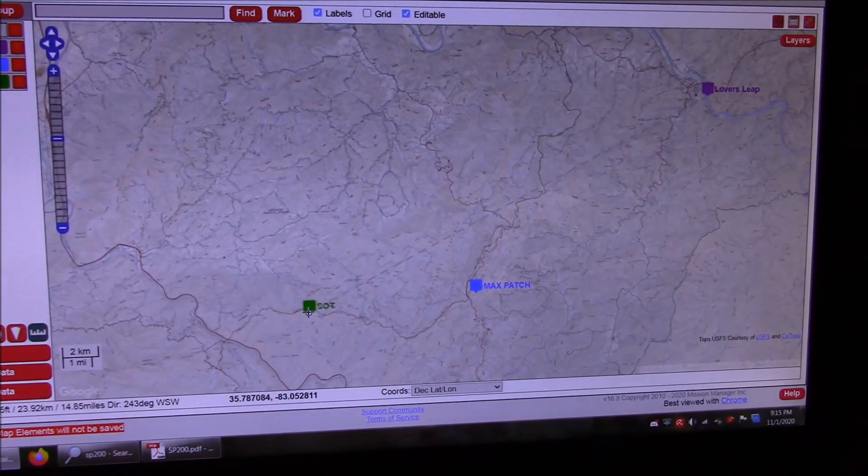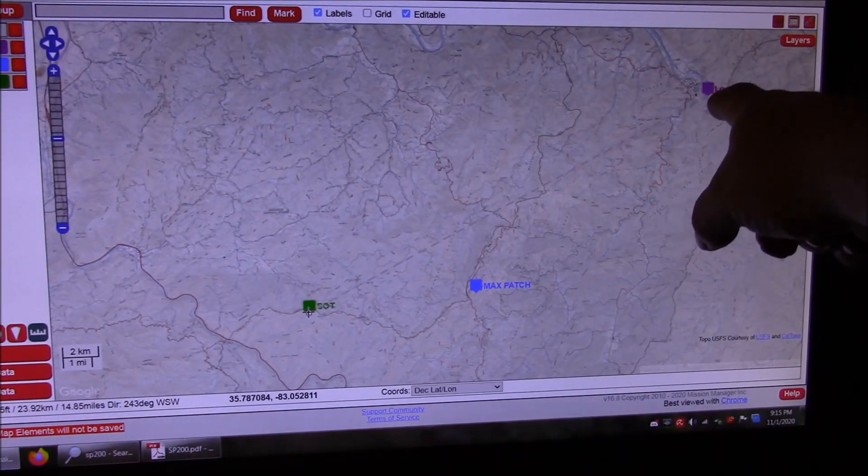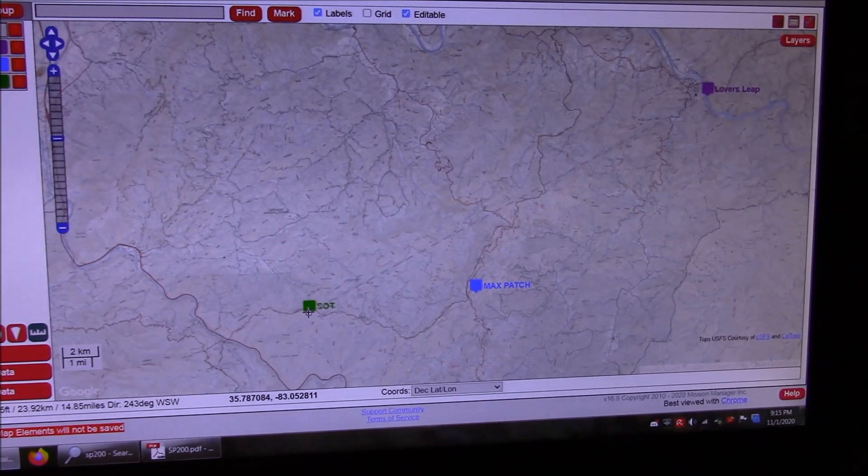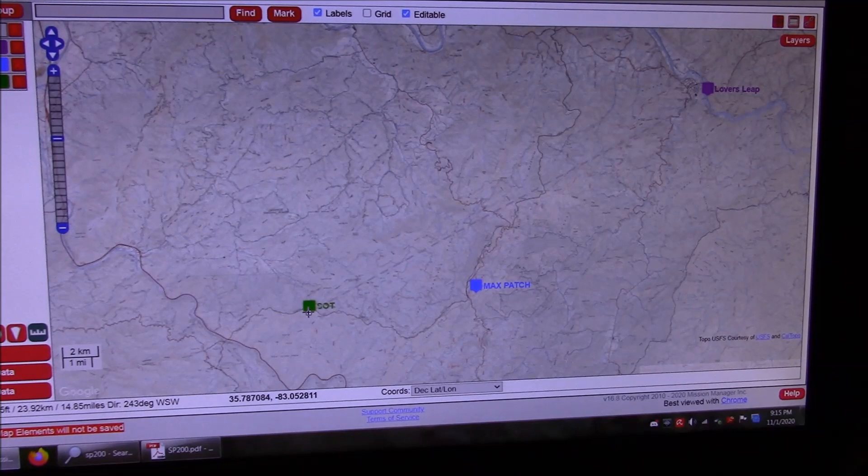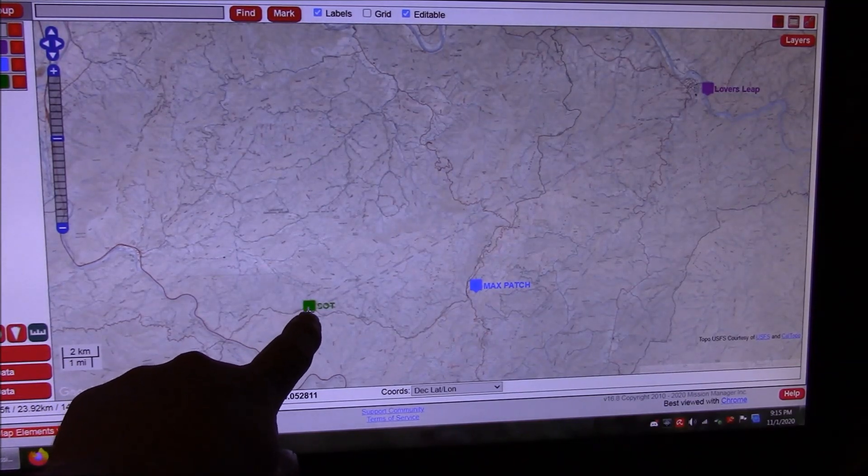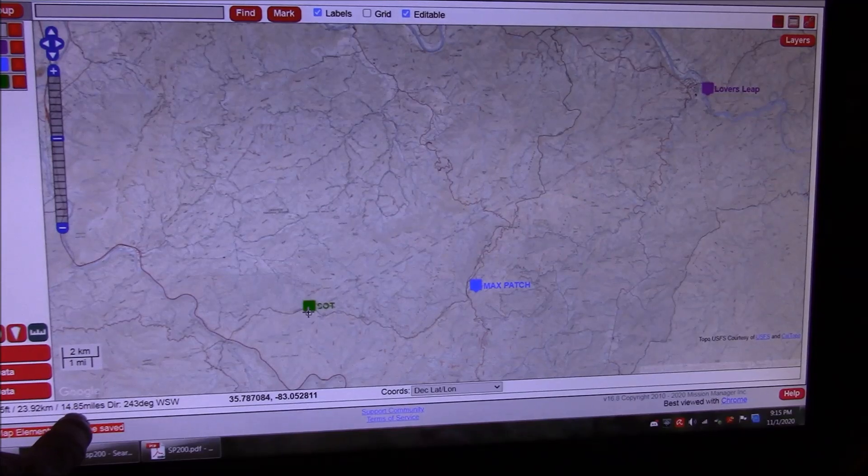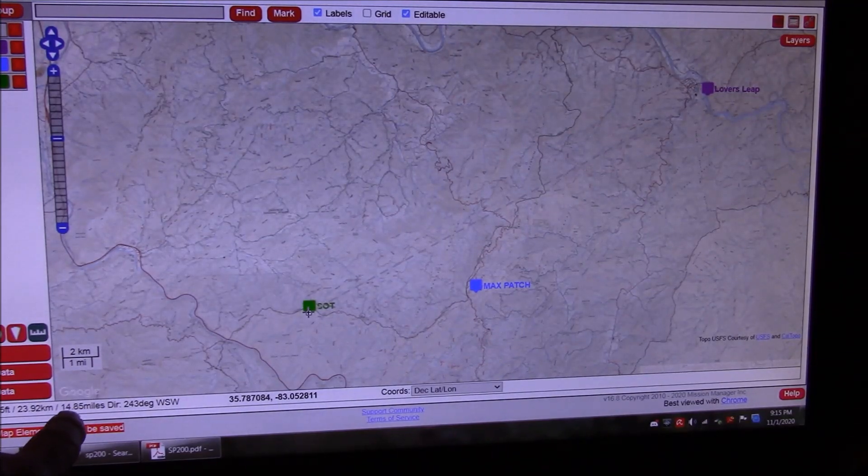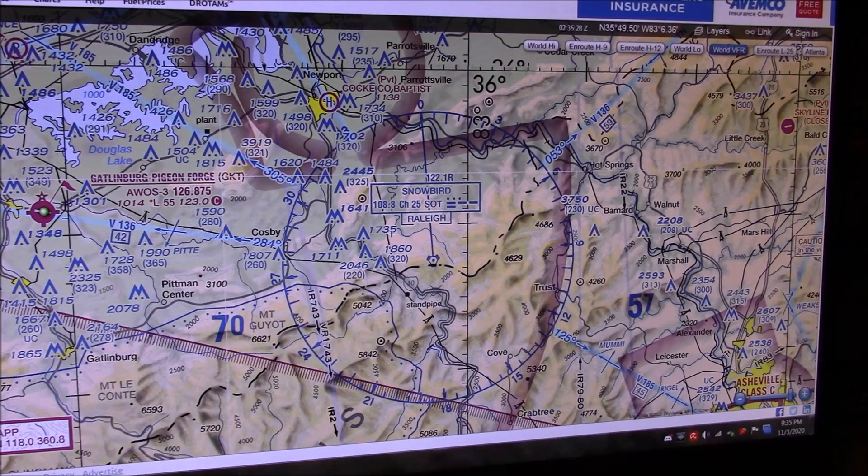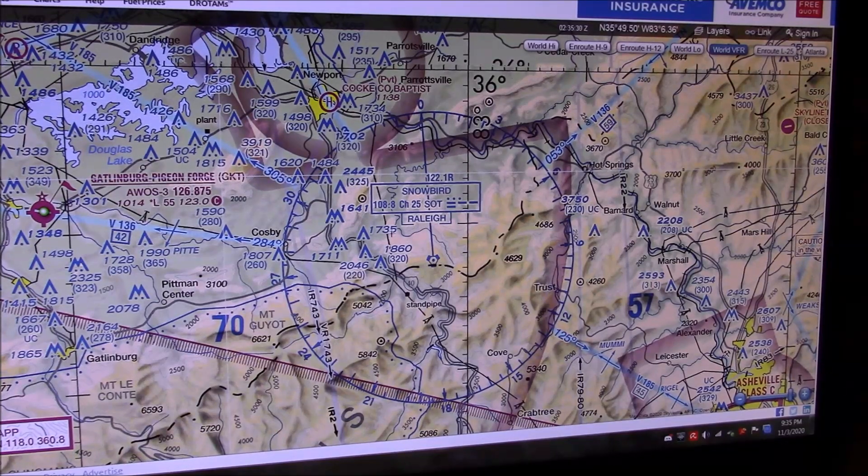Our second test we performed was with our receiver at the peak of Lover's Leap, which is just outside of Hot Springs, North Carolina, back to our Snowbird VORTAC here. And the distance is 14.8 miles, almost 15 miles, at a bearing of 243 degrees WSW. And here is our VORTAC in question, as displayed on an aeronautical chart.